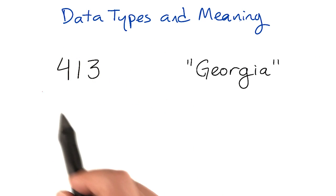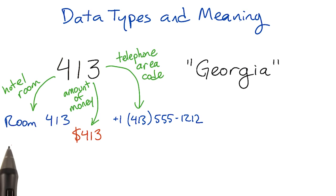And the number 413 means something different if it's a hotel room number, or an amount of money, or the telephone area code for Western Massachusetts.